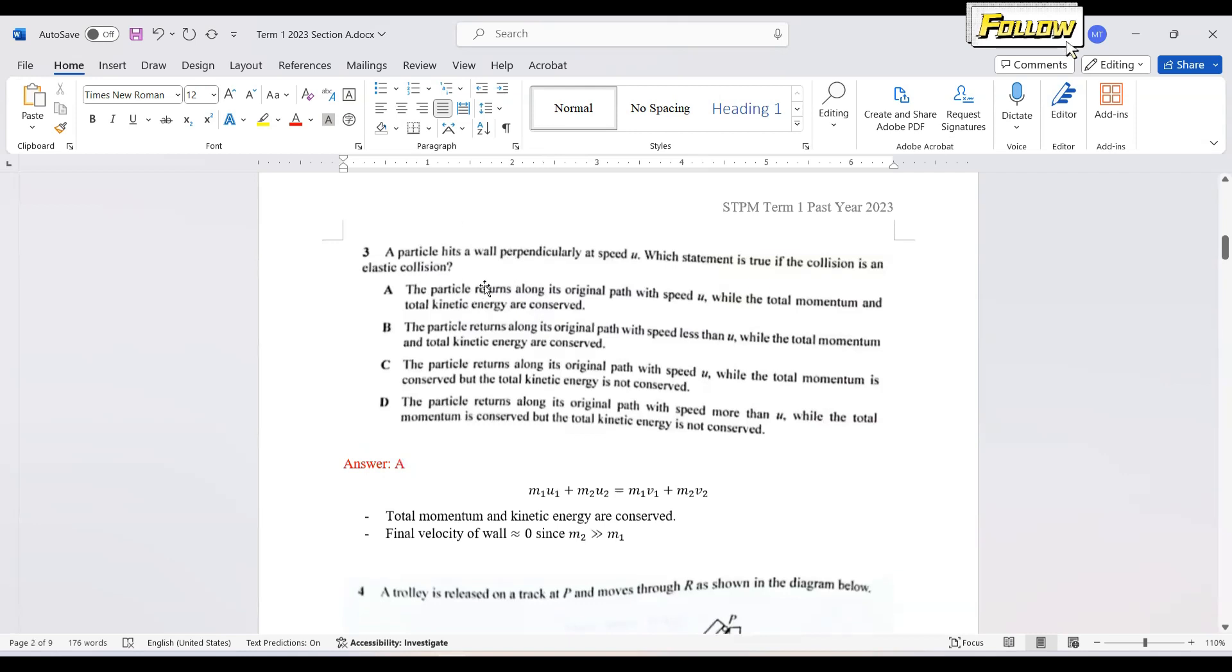For elastic collision, we have the total momentum and kinetic energy conserved. The wall has a larger mass compared to the particle. So the final velocity of the wall is almost 0, so the final velocity of the particle should be the same as its initial velocity. So the answer, I believe it should be A. The particle returns along its original path with speed u, while the total momentum and total kinetic energy are conserved.